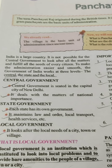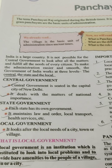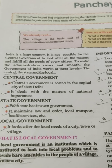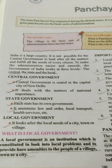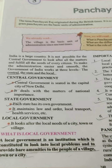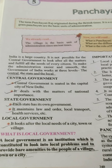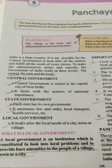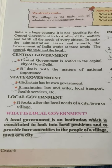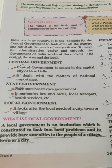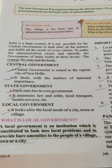Central government is seated in the capital city of New Delhi. It deals with the matters of national importance. State government — each state has its own government. It maintains law and order, local transport, health services, etc. Local government looks after the local needs of a city, town, or village.